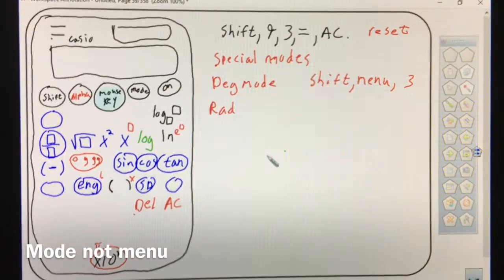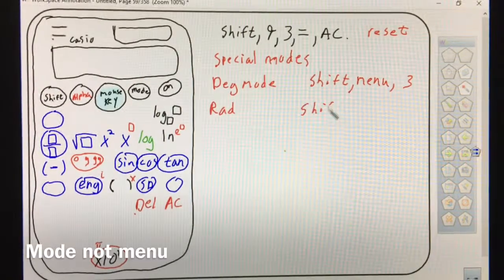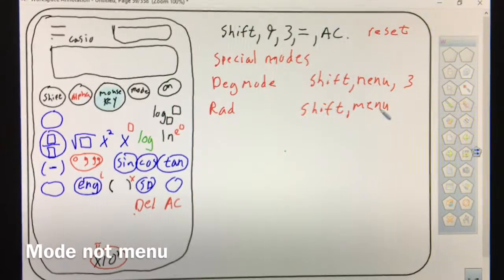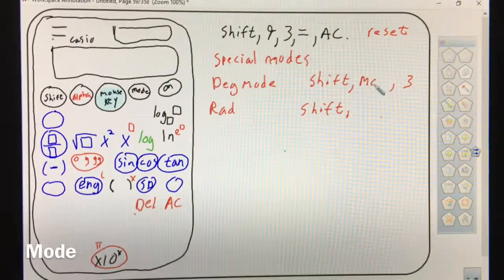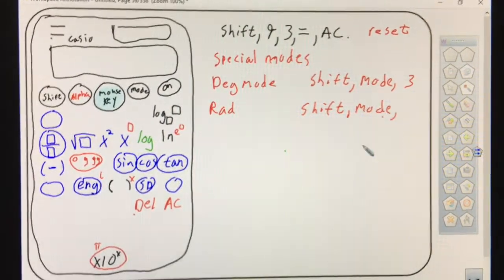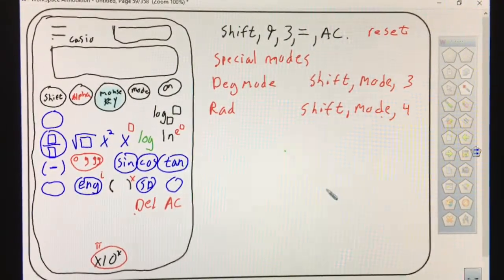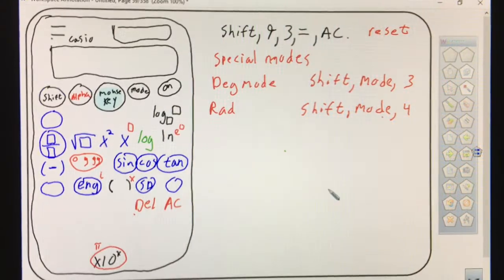To go in radian mode, you're going to hit shift - I'm sorry, mode. Shift mode three and shift mode four to go in radian mode. Nothing else on that screen is going to be of use to you.